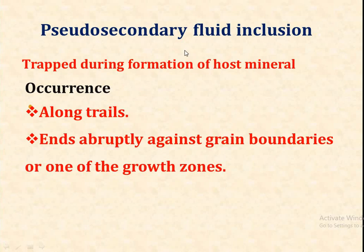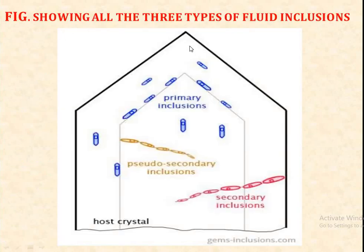Pseudo-secondary fluid inclusions are trapped during the formation of the host mineral and occur along trails that terminate abruptly against grain boundaries or along growth zones. This figure shows all three types of fluid inclusions: primary, secondary along fractures, and pseudo-secondary, all within the host crystal.